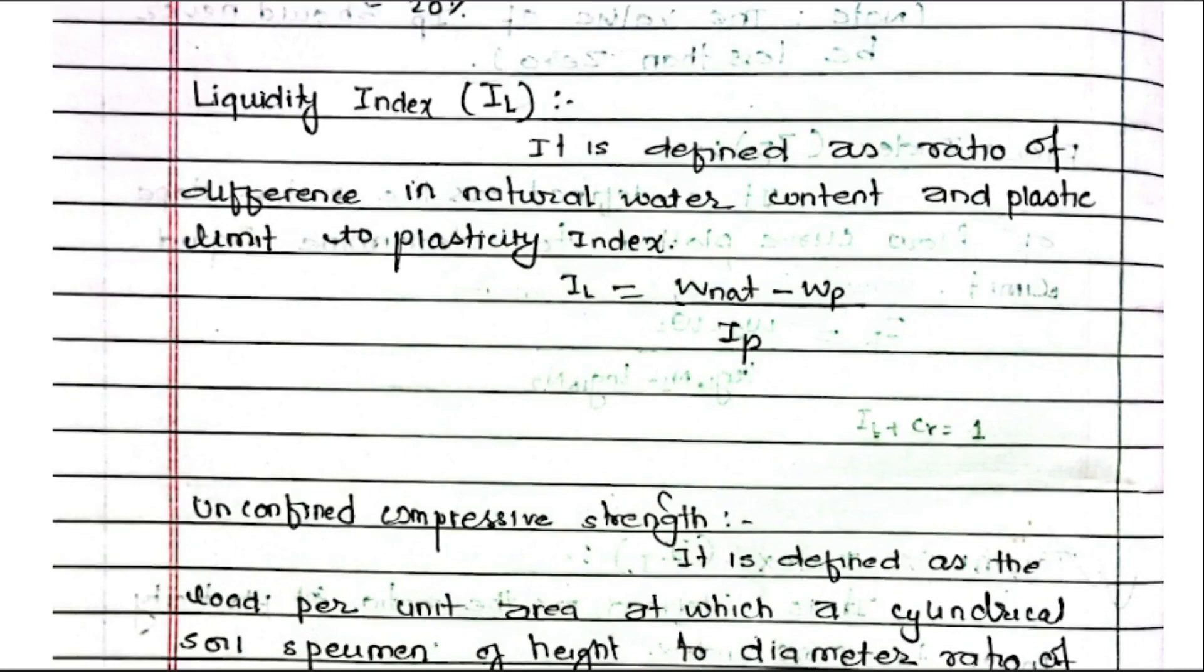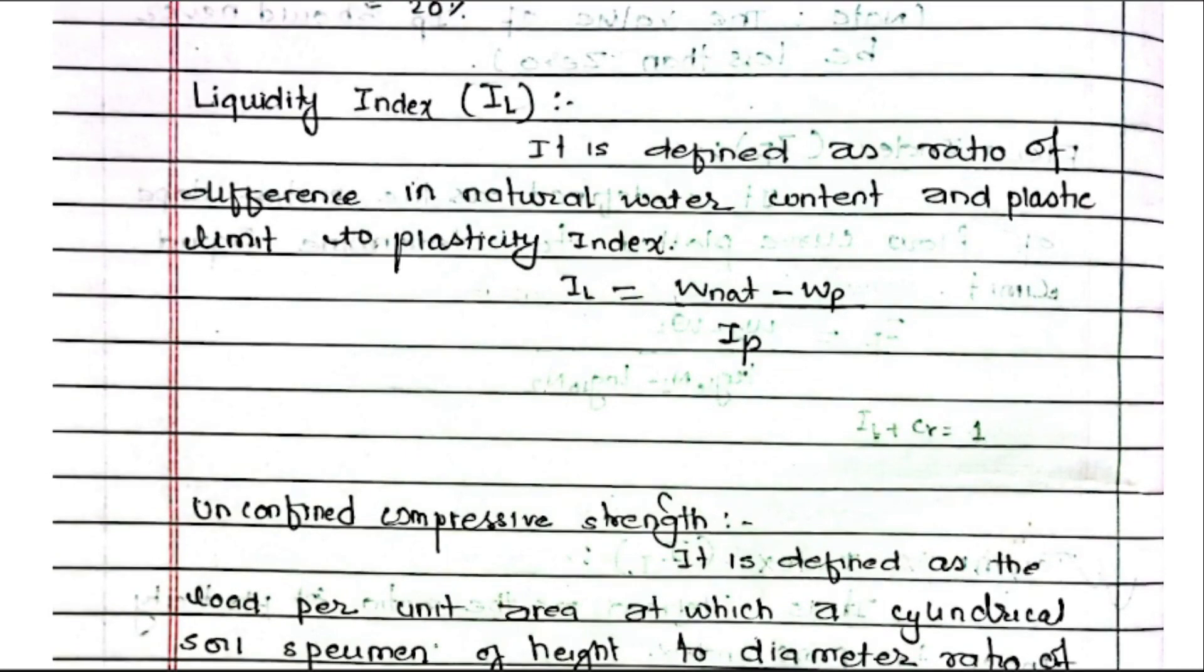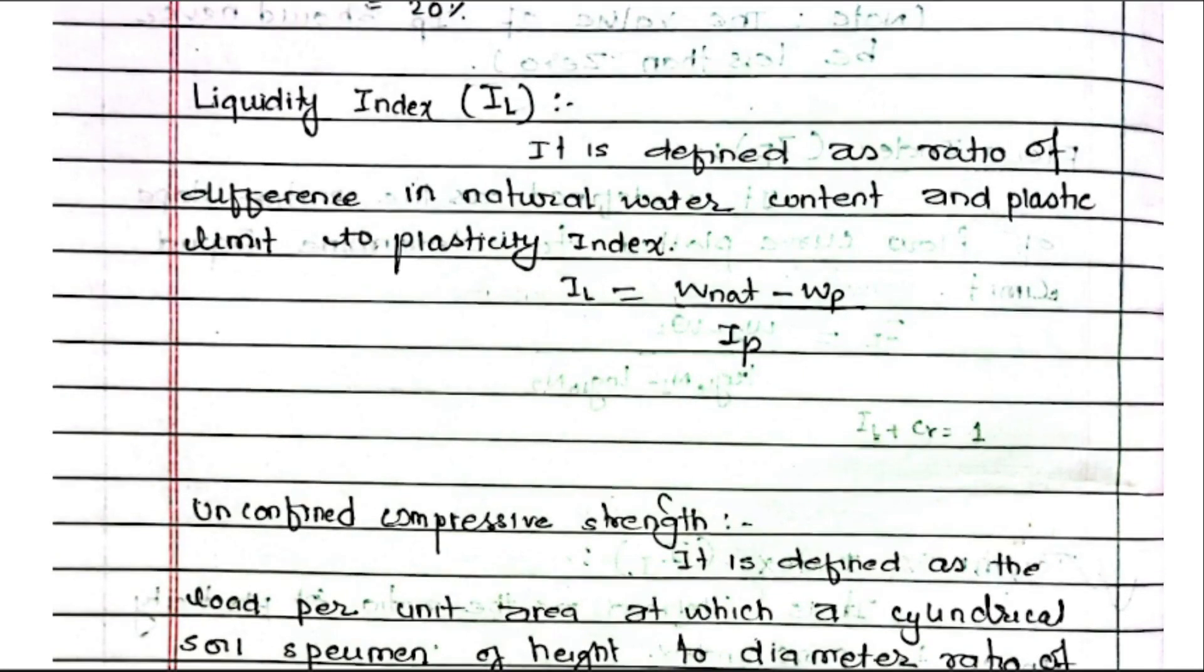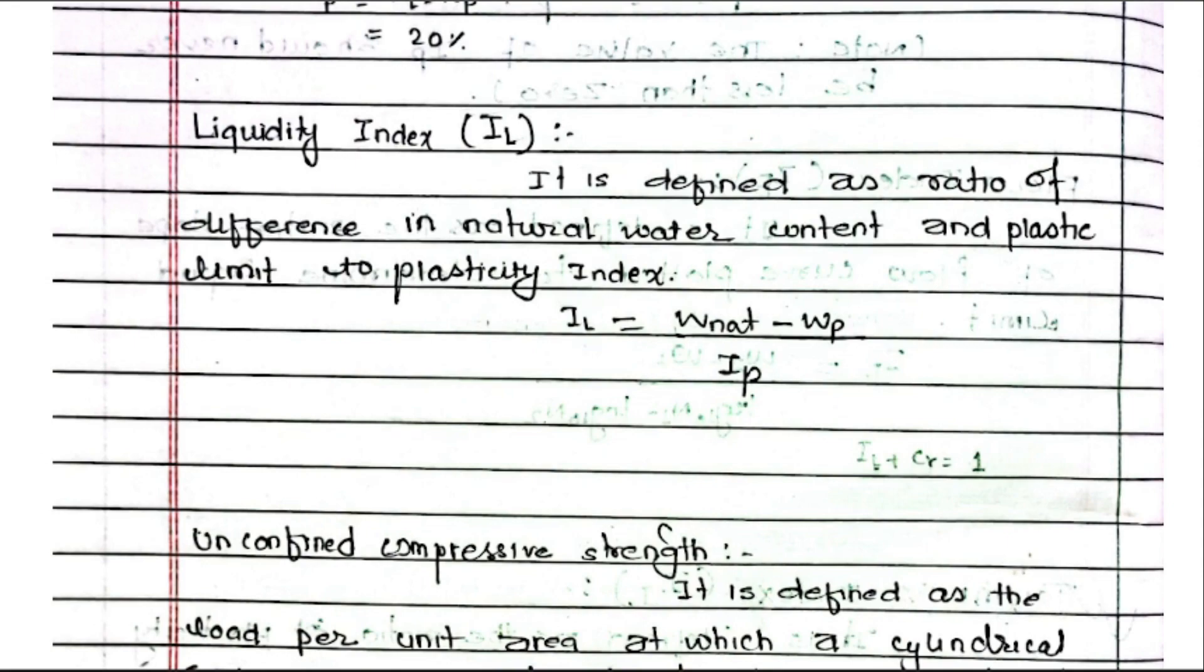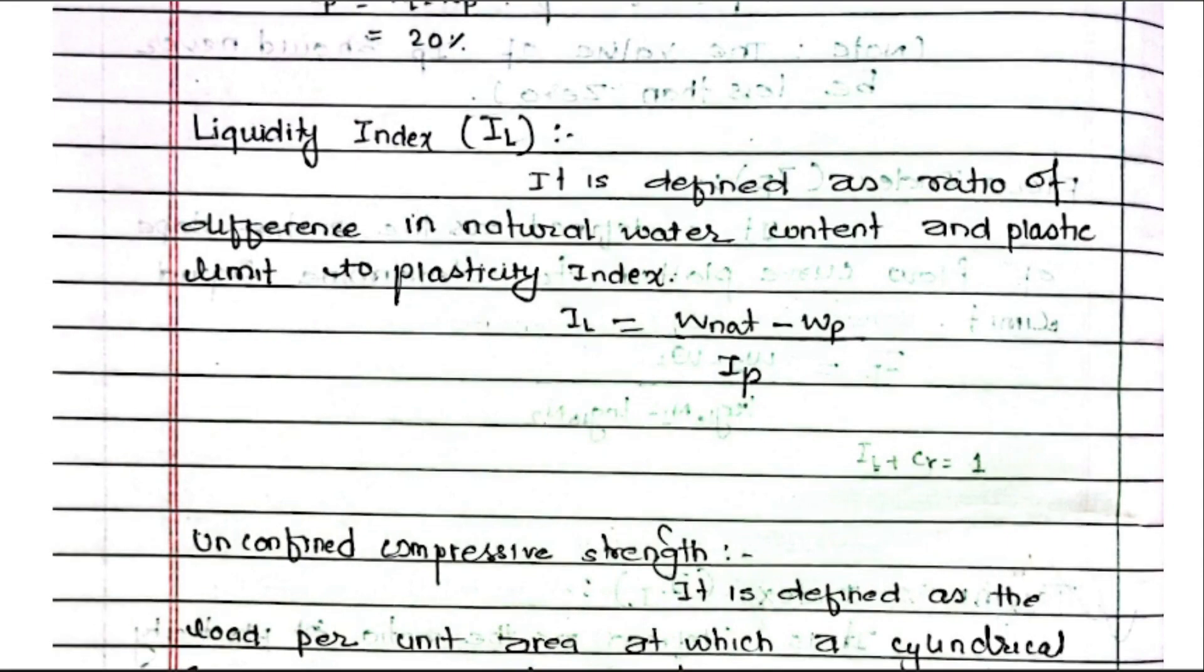Liquidity index IL: It is defined as the ratio of difference in natural water content and plastic limit to the plasticity index. IL equals W natural minus WP upon IP.